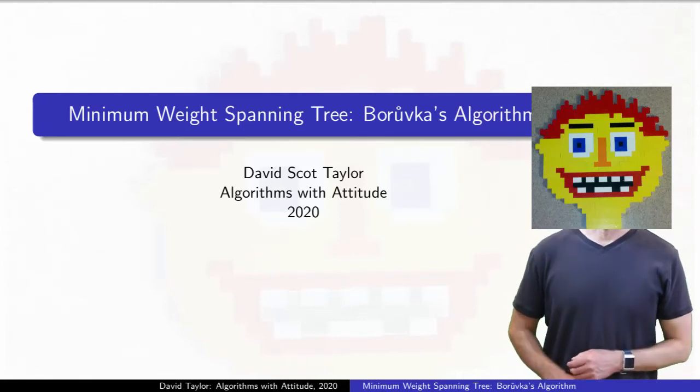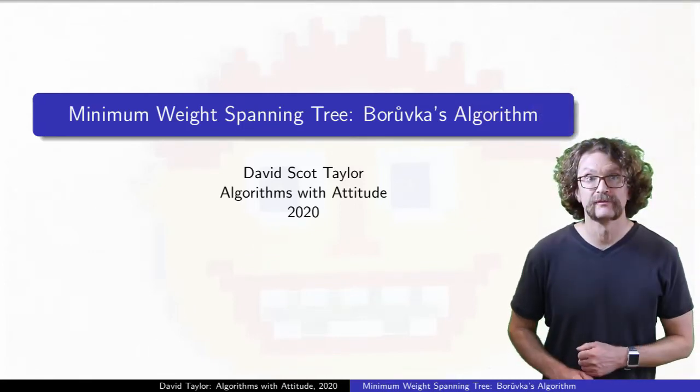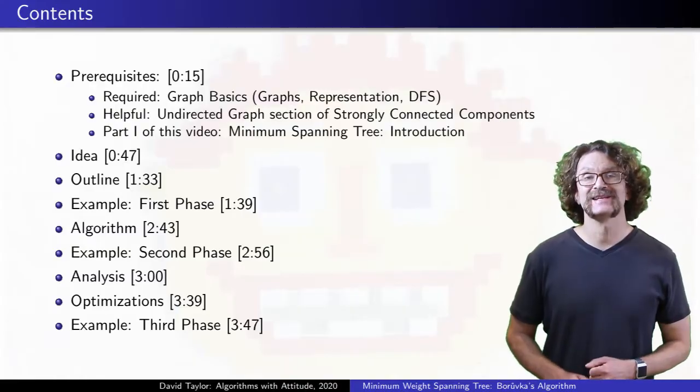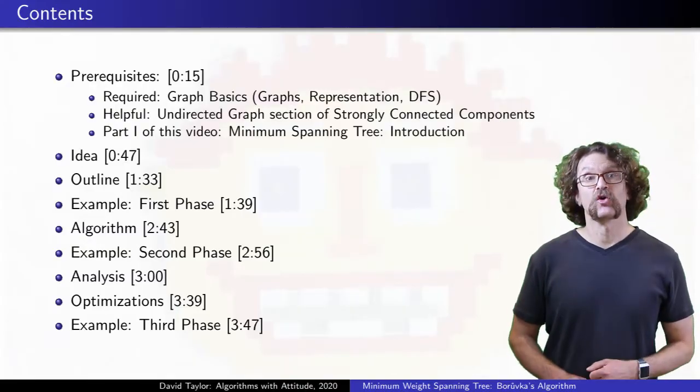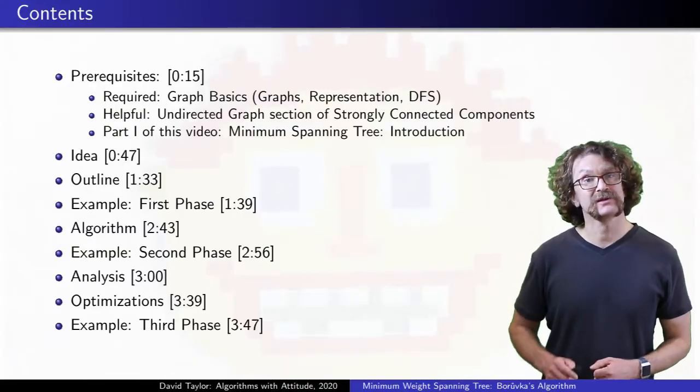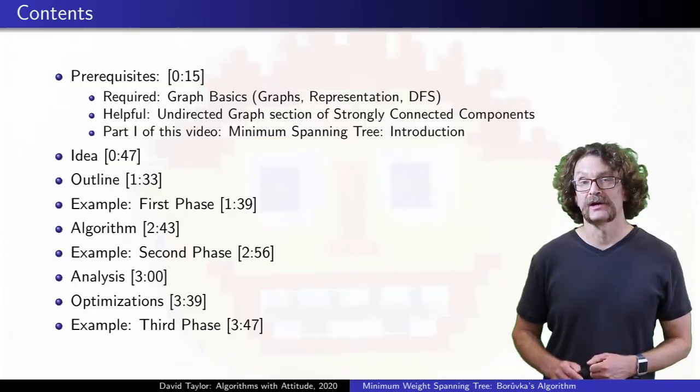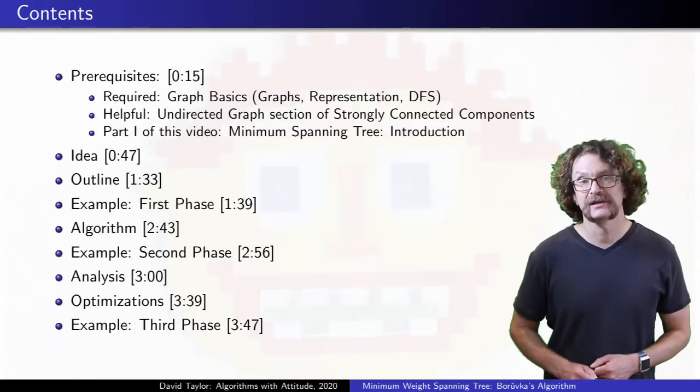This video is on Borůvka's minimum spanning tree algorithm, the oldest known algorithm for minimum spanning trees, from 1926. It's not in the Cormen book that I usually use, but it's covered nicely in a free online textbook by Jeff Erickson. I'll put a link to that in the description.